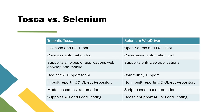Those are all the differences between Tosca and Selenium. Both have their own advantages and disadvantages, and you have to decide based on your budget, the types of applications, and the skill sets of your team members — which automation tool is best suited for your application.